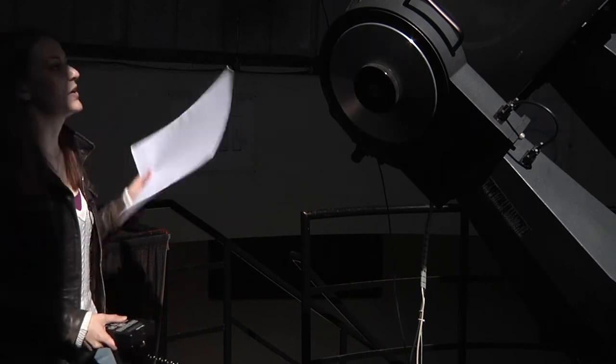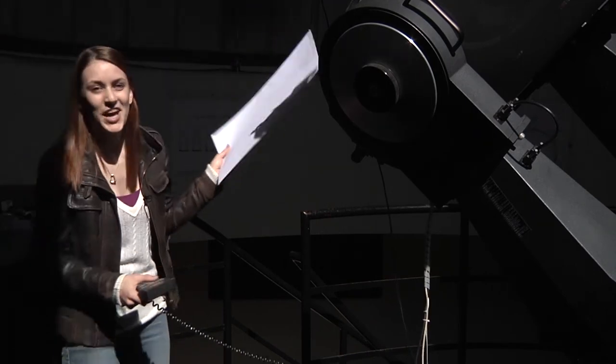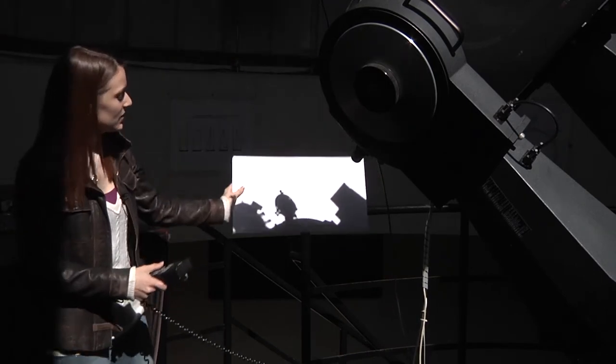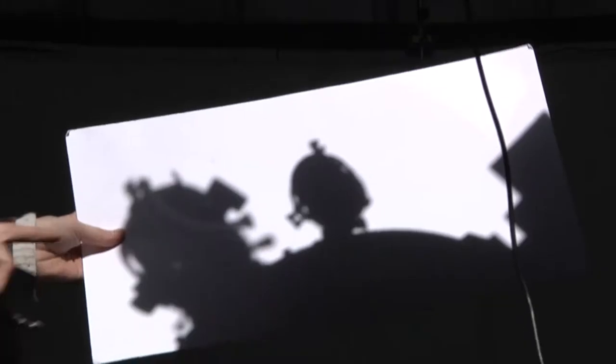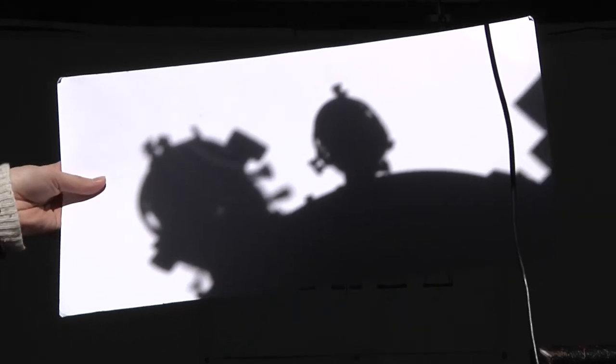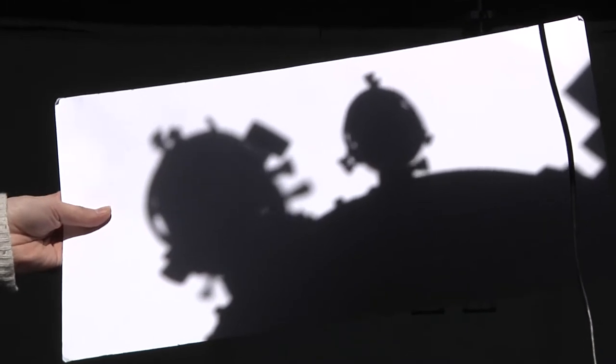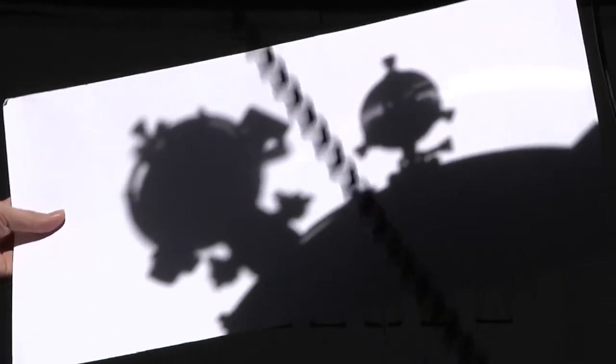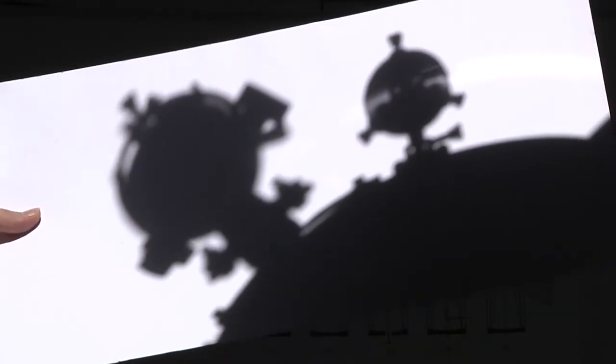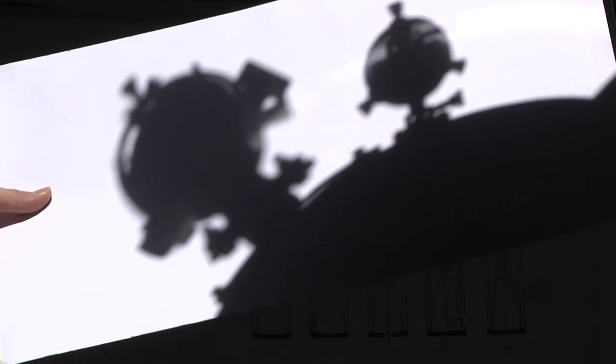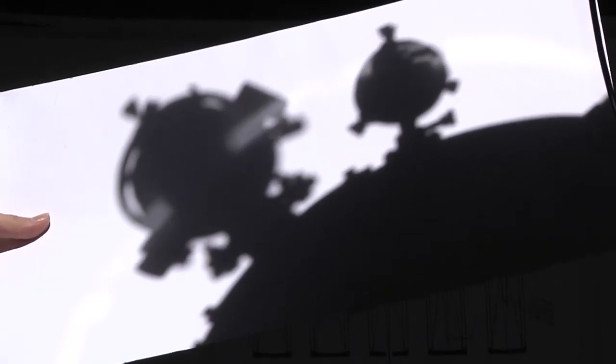After you have the telescope in the general area, you want to use a method called the shadow method. Here you can see if I put a white piece of paper down, you can see the shadows from the guide and finder scope reflecting down onto this white piece of paper. What you want to do is move the telescope in order to minimize those shadows as much as possible. You want the light to come straight down and cast very clear shadows down on the white piece of paper.